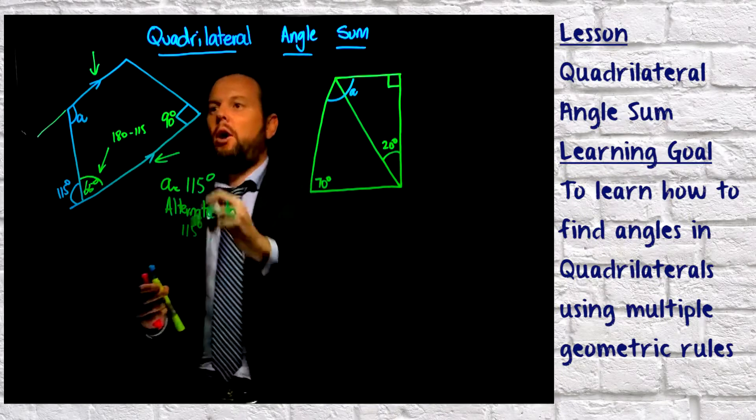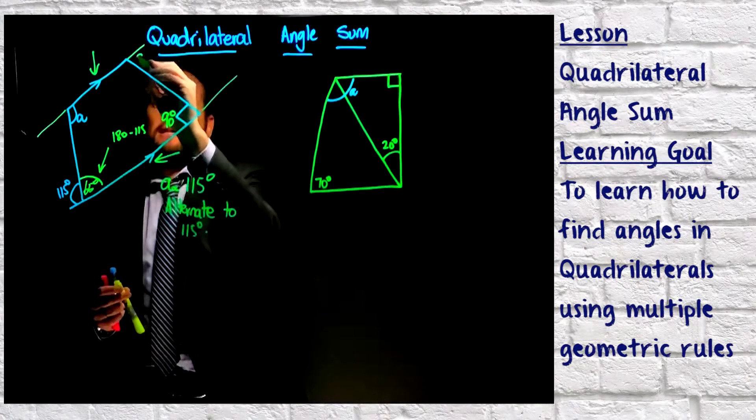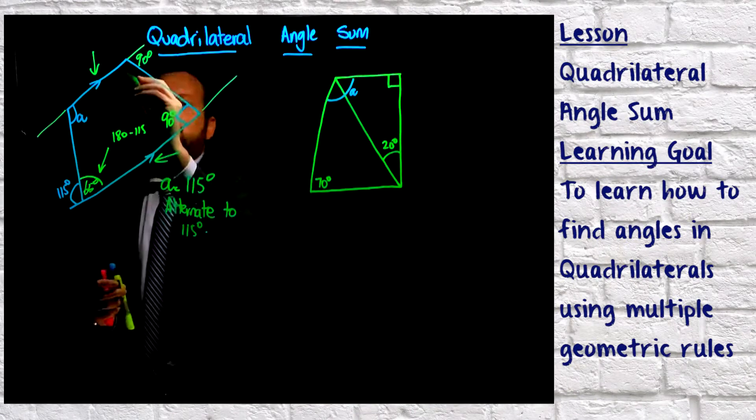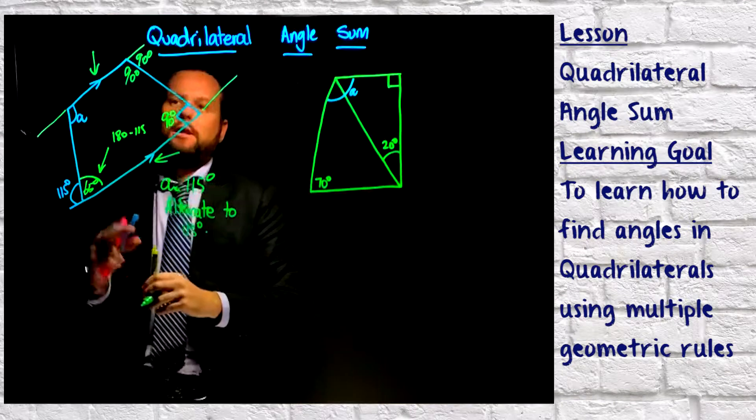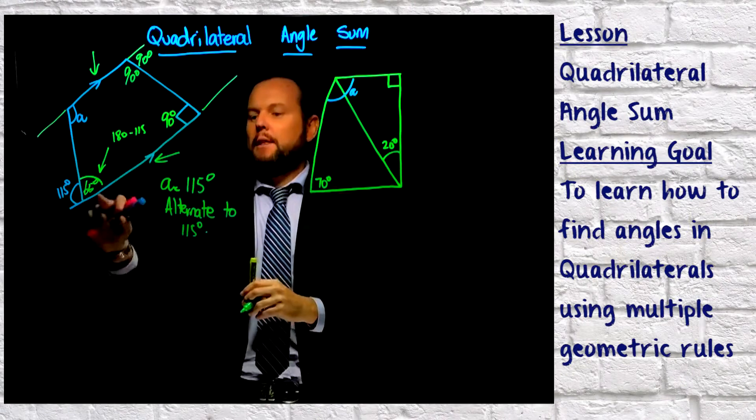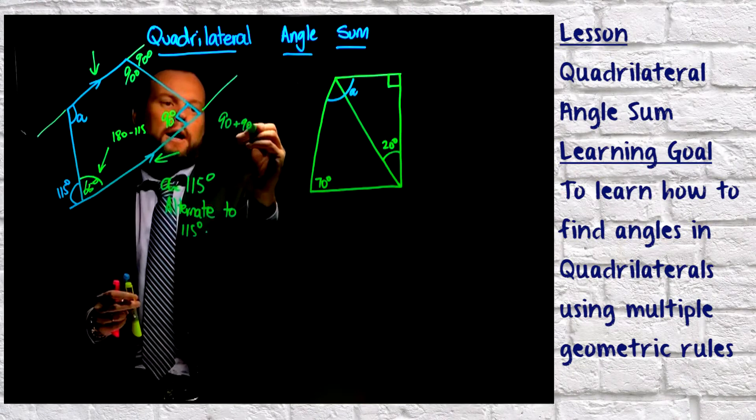Now you could also say, well, they're parallel lines, so I can extend this one, which means that this here would be 90 degrees because it's alternate, which means that this one here would be 90 degrees because it's also co-interior to that. And then we could add them up. And I could go 90 plus 90 gives me 180, and then I could add my 65.